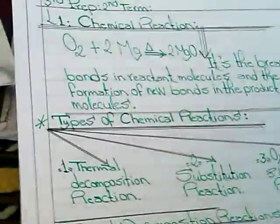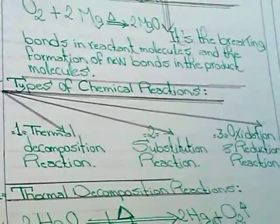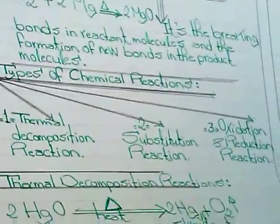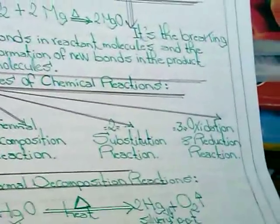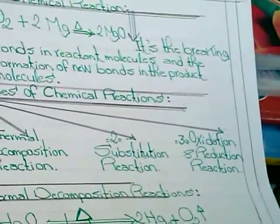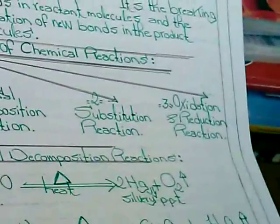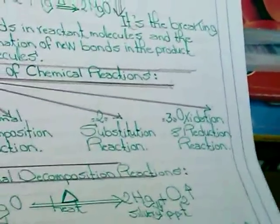We have many types of chemical reactions: Thermal Decomposition Reaction, Substitution Reaction, and Oxidation and Reduction Reactions, which are a type of substitution reaction.